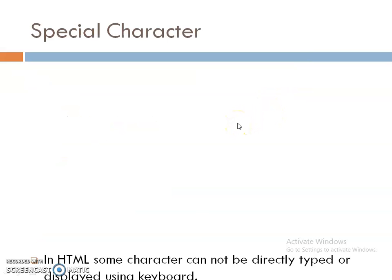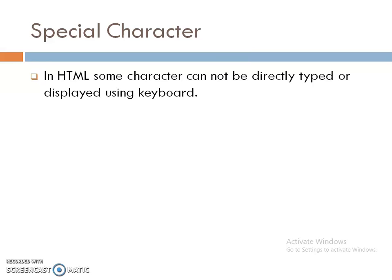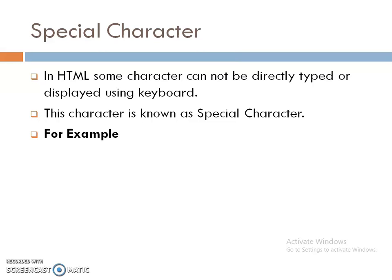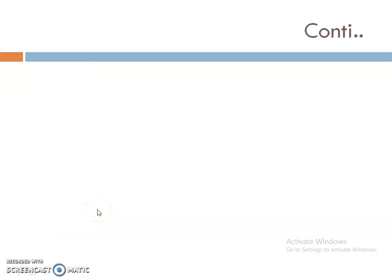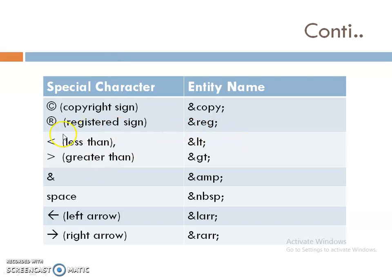Now special characters in HTML. Many special symbols are available on the keyboard, like less than, greater than, ampersand, semicolon, etc., but we cannot directly write them in our HTML web page. For that, we have to use special entity names. These types of characters are known as special characters. For example, a copyright symbol — we cannot directly write it, so we use the entity name ampersand copy semicolon, and we will get the copyright symbol as output. Some more special characters with entity names include less than, greater than, ampersand, left arrow, and right arrow.